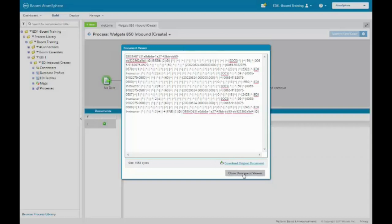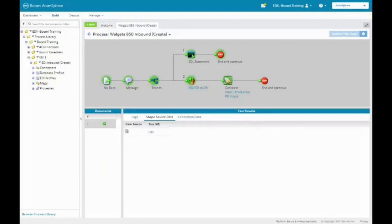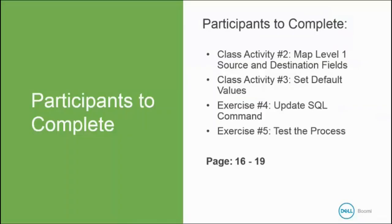Close the Document Viewer. Now it's your turn to do Class Activity Number 2 to map the Level 1 source and destination fields, Class Activity Number 3 to set default values, Exercise Number 4 to update the SQL command, and Exercise Number 5 to test the process. When we return, we're going to be looking at EDI identifier instances.